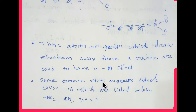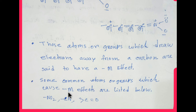Some common atoms or groups which cause a minus M effect include the nitro group, the cyanide group, and the carbonyl group. These are all groups that show negative mesomeric effect, and they all contain a double bond.